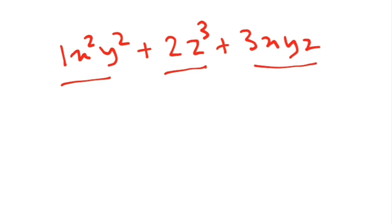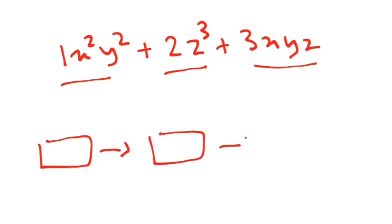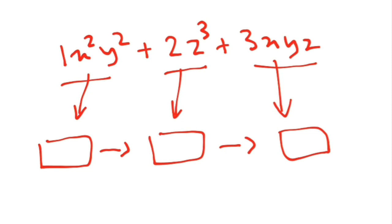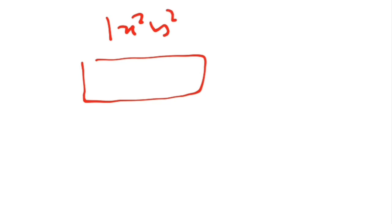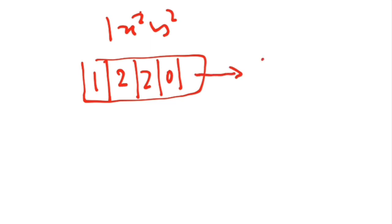The ninth lab program is about polynomials. Suppose you have a polynomial with three terms and you have to represent it using a linked list. Each term is stored in a node. For example, for the term 1x²y², you create a node with columns for the coefficient (1), the exponent of x, the exponent of y, the exponent of z, and a link to the next term.